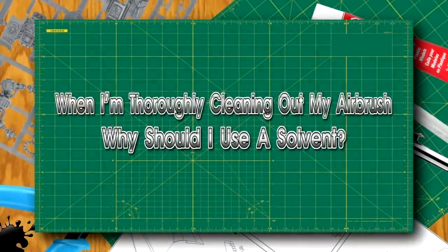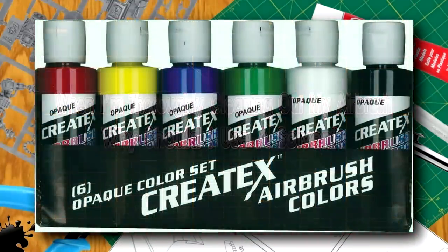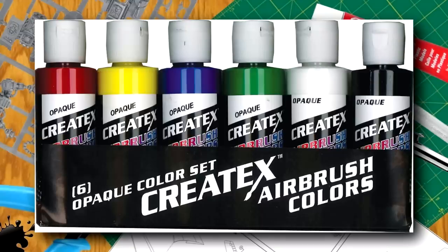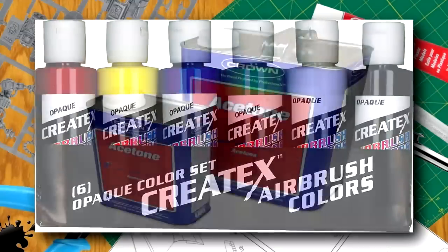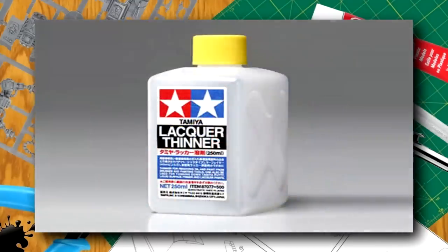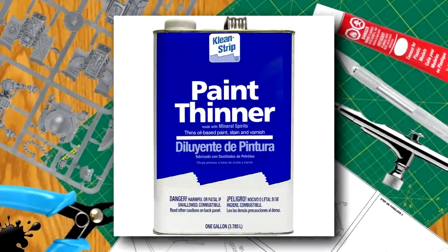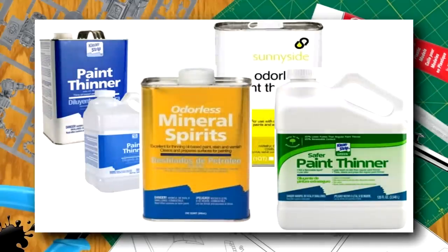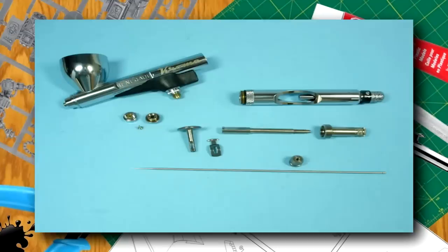When I'm thoroughly cleaning out my airbrush, why should I use a solvent? Solvents quickly break up the molecular bonds paint forms when it dries. I recommend acetone or lacquer thinner as solvents. But stay away from paint thinner. Paint thinner, in my experience, doesn't seem to work well cleaning airbrushes. Do not soak your airbrush in a solvent. There are parts and greases in other areas of the airbrush that don't take kindly to it.